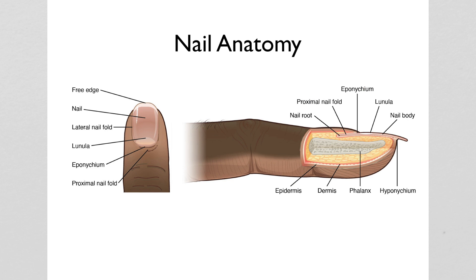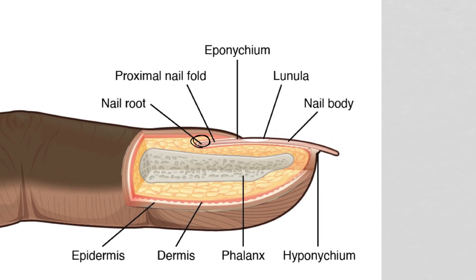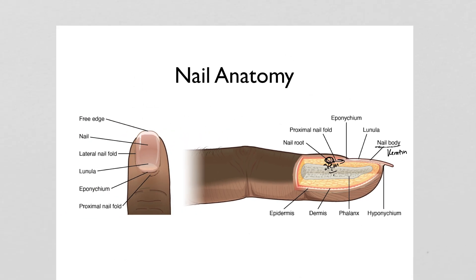Fingernails follow the same principle — stem cells at the nail root undergo cell division, migrating forward to form the nail body, which is also made of keratin, just packed more densely than in hair or the stratum corneum. Keratin is a versatile protein: the more tightly it's packed, the thicker and harder the structure. Even a rhinoceros's horn is made of keratin — just an extreme example of compacting as much of it together as possible.